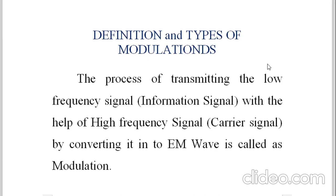Why is modulation necessary? Number one reason: the size of antenna is drastically reduced. Number two reason: the signal to noise ratio is also increased — strength of the signal becomes more and strength of the noise becomes very less. Number three reason is fidelity, meaning power fed to the antenna is increased. These are the reasons why modulation is done, and the main reason is the size of antenna.